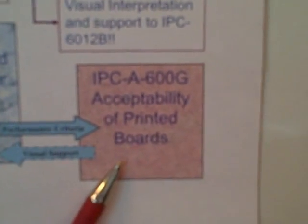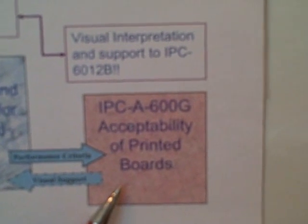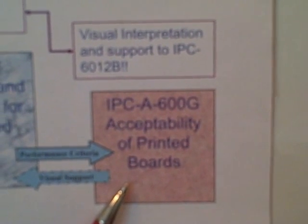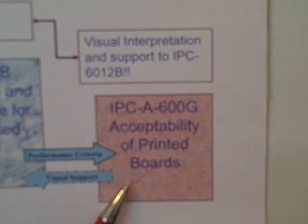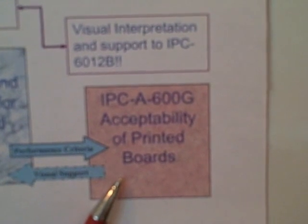And then finally, this goes to IPC A600. What IPC A600 really does is it provides visual acceptance support for the finished printed board product based on the requirements in 6012.